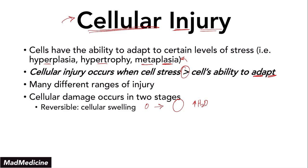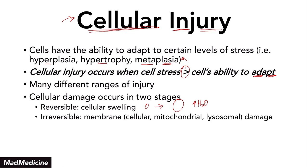The first stage is going to be reversible, in which you're going to have cellular swelling occurring — the cell is just going to grow in size because you increase the intracellular water concentration. But after the reversible stage, if you do not remove the stressor, you are going to progress to the irreversible stage where you're going to have membrane damage, especially the cellular membrane, but also the mitochondrial membrane and lysosomal membrane.